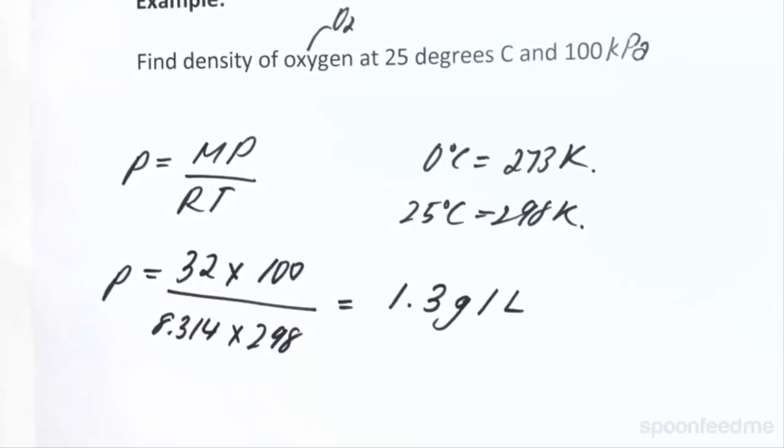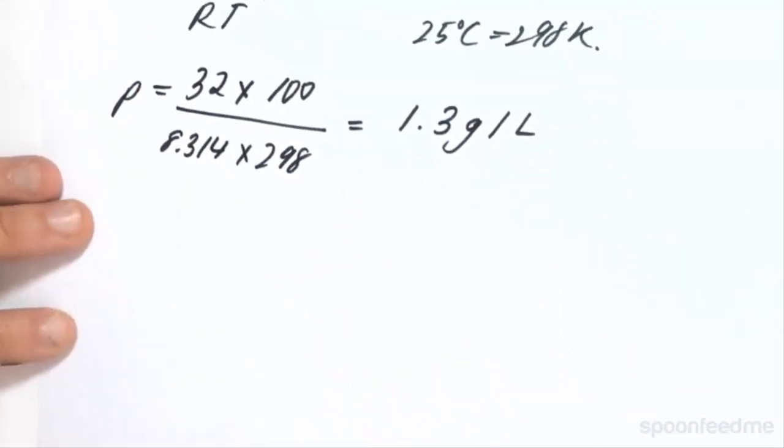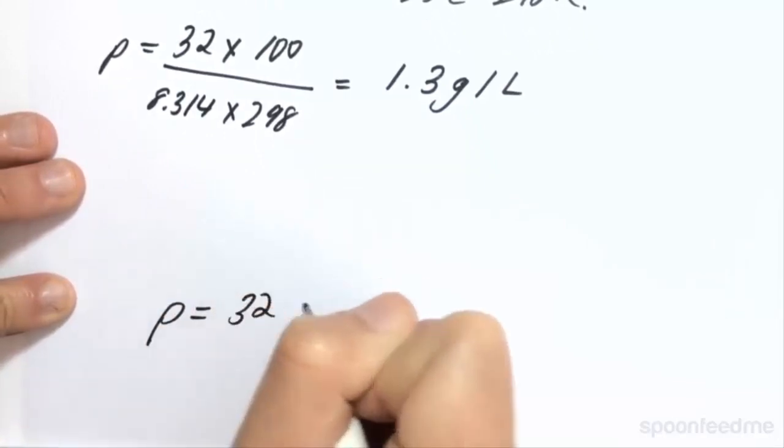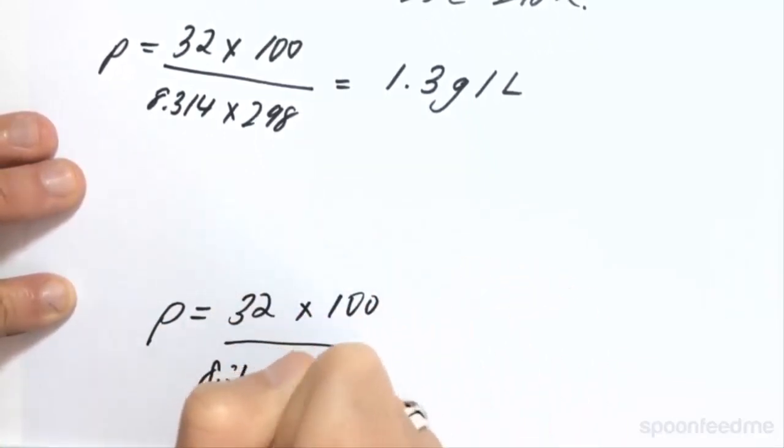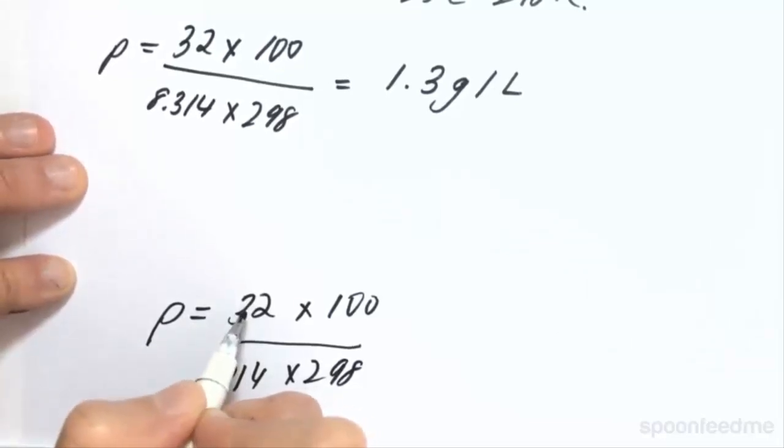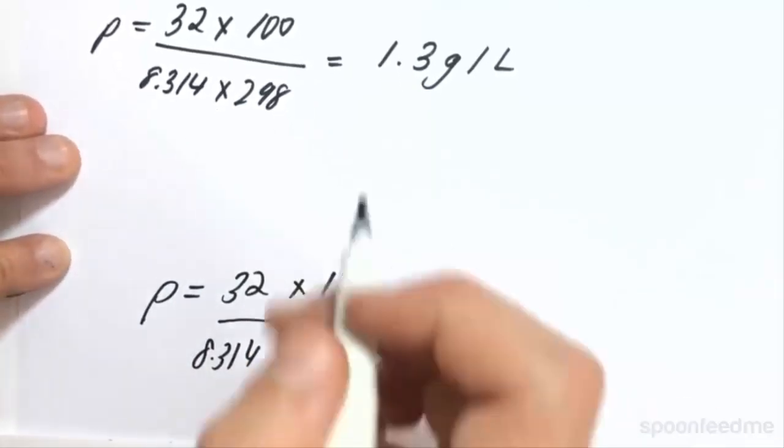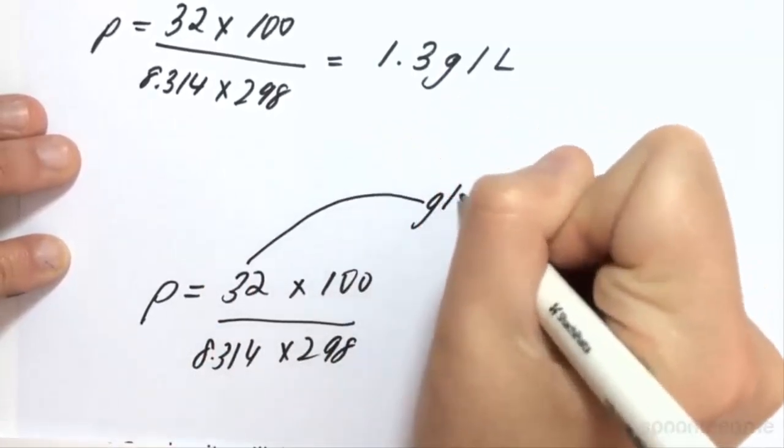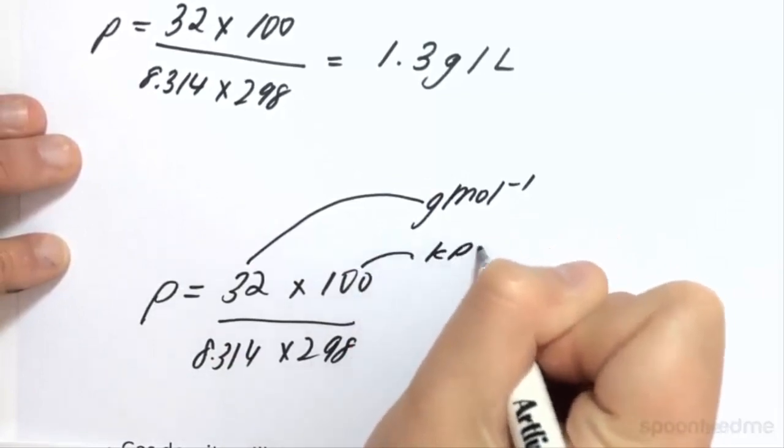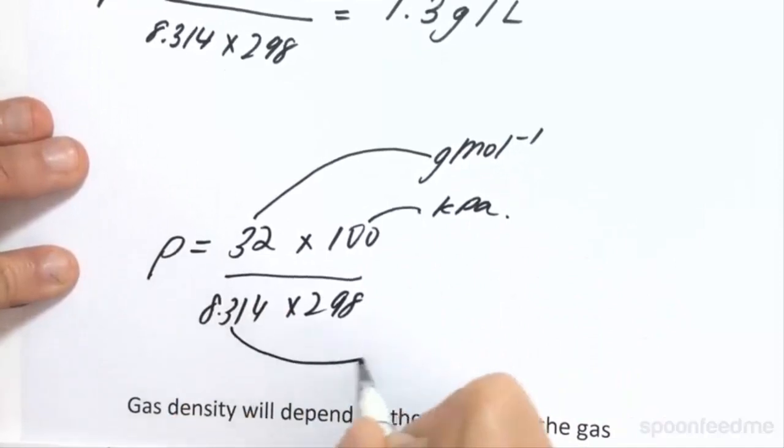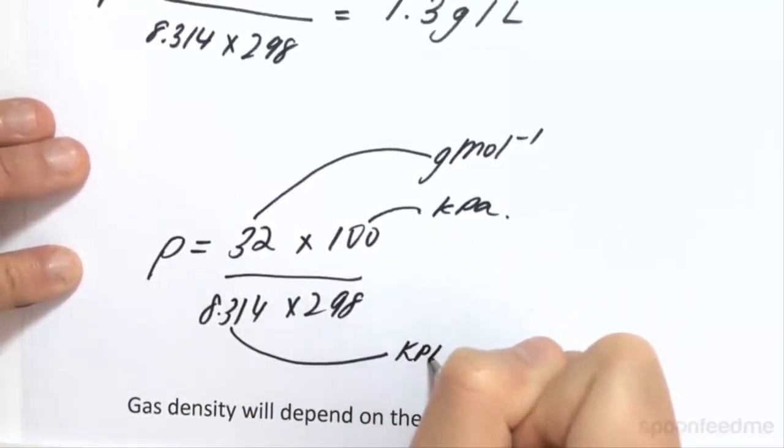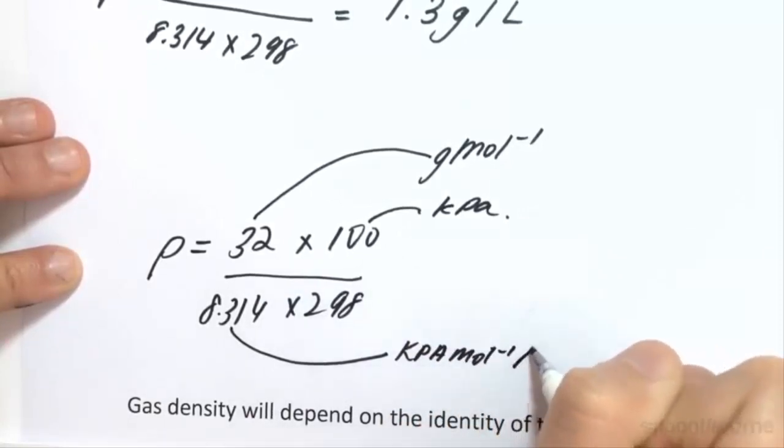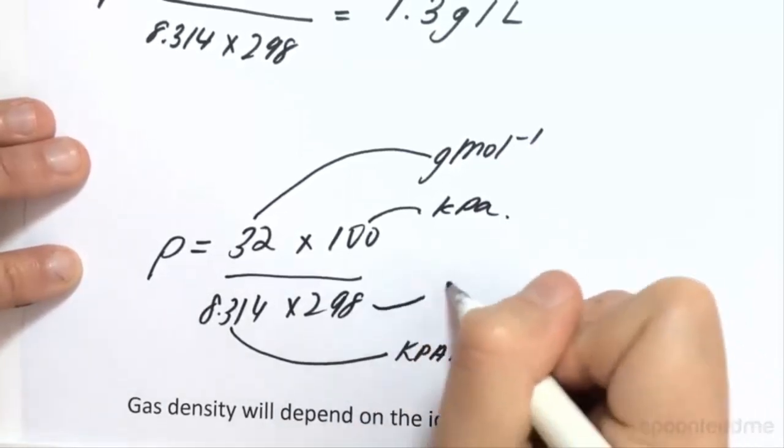The best way to ensure that we've done this correctly is to write the units down of every component of the equation to make sure that we end up at grams per liters, the units for density. So I'll demonstrate how we can do this now. So I'm actually going to write this out again down here and I'll space it out a bit more. So density is equal to 32 times 100 over 8.314 times 298. So we know that this here is our molar mass. So this here is equal to grams per mole. This here is equal to kilopascals. This here is equal to kilopascals per mole per Kelvin. And this here is just equal to Kelvin.